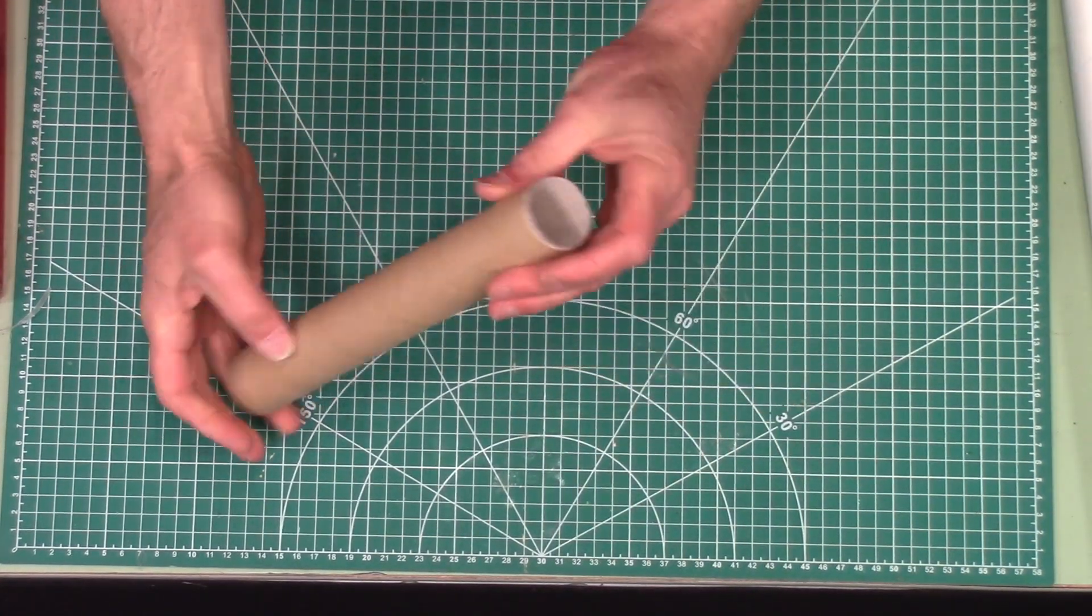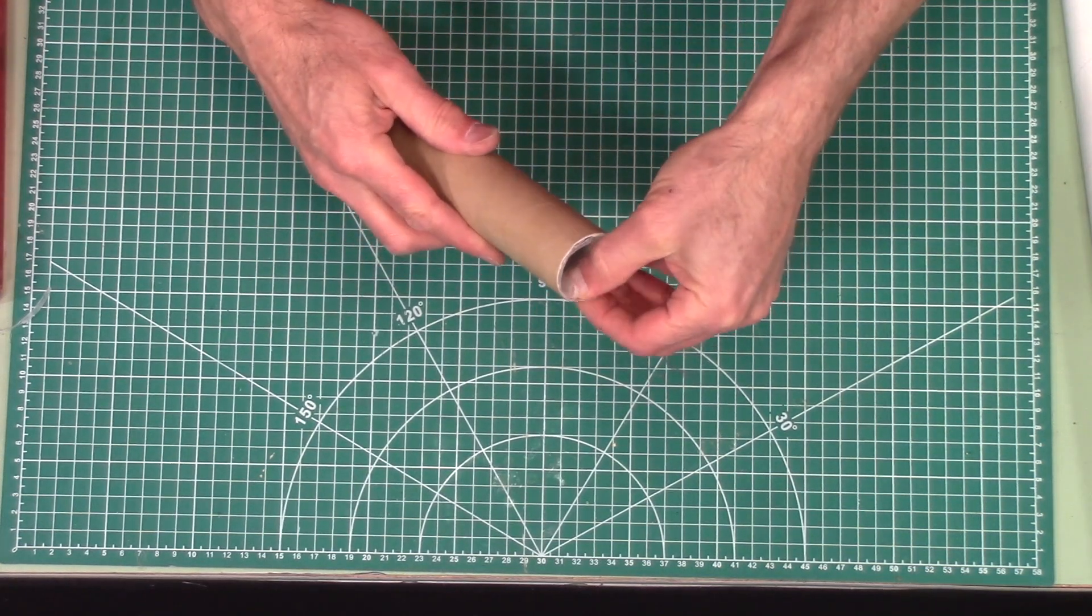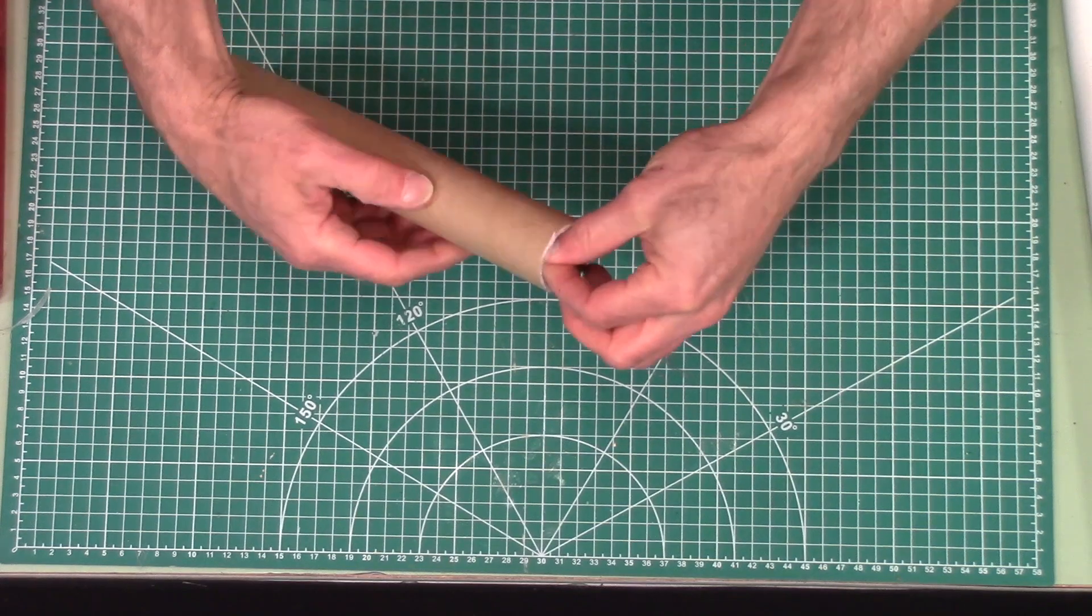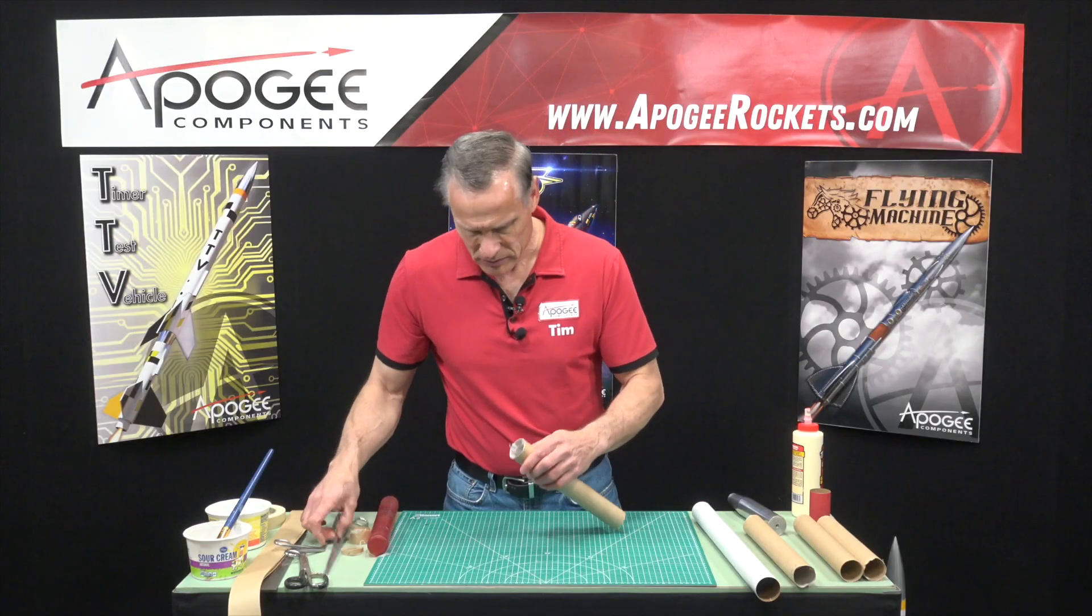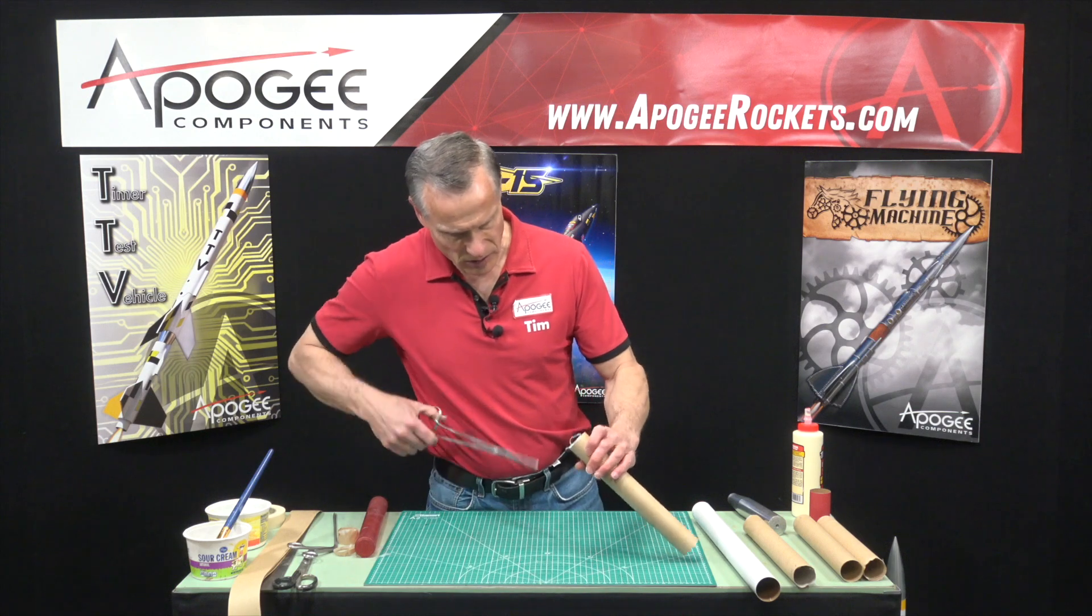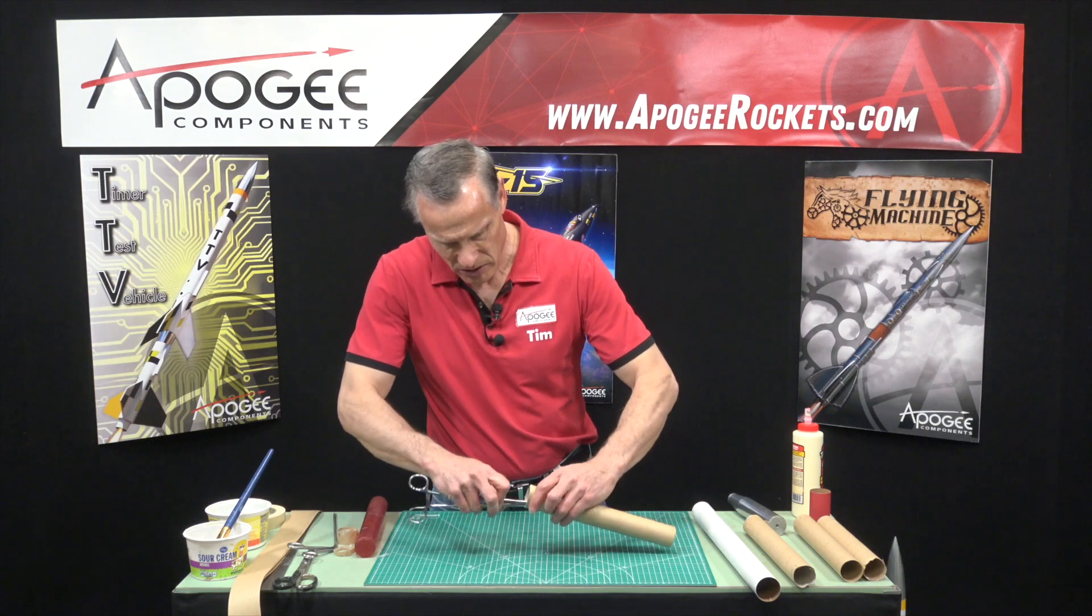And now it's just a matter of peeling out the wax paper on the inside. And that comes out pretty easy. So I just got this gripper here to kind of get it started.